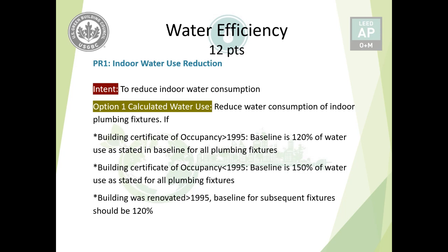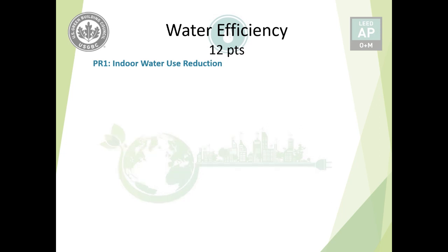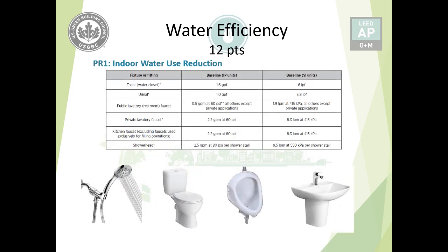The baseline fixtures should follow: 1.6 GPF for toilet, 1.0 GPF for urinal, 0.5 GPM for public lavatory, 2.2 GPM for private lavatory, 2.2 GPM for kitchen, and 2.5 GPM for showerhead. You have to add 20% or 50% based on the certificate of occupancy of your building. This table gives the flow rate of your sanitary fixtures.